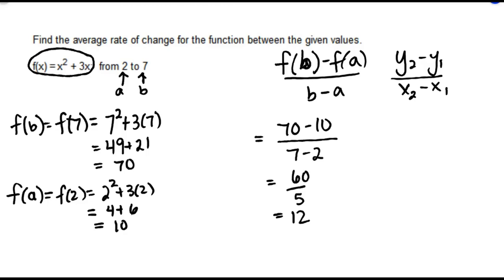So the average rate of change for our function f(x) = x² + 3x from 2 to 7 is 12.